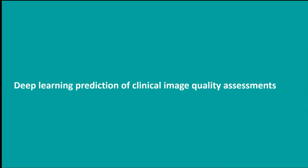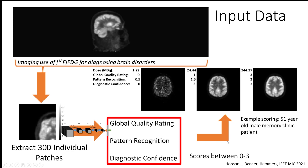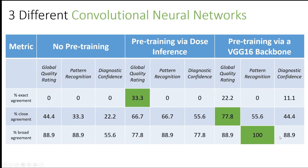To finish, deep learning prediction of clinical image quality assessments: we trained up a CNN based on clinician assessments of image quality for a collection of FDG brain scans for dementia patients. The CNN successfully trained to predict global quality rating, pattern recognition, and diagnostic confidence. Looking at low, mid, and high dose levels, it does a fairly good job — particularly when benefiting from pre-training and an EfficientNet backbone — showing good agreement with the clinician.